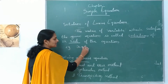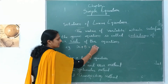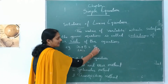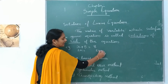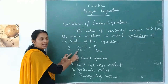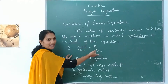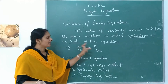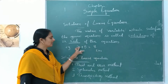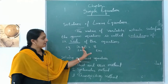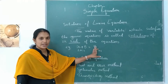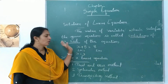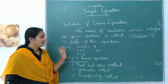One example: x plus 5 is equal to 8. x plus 5 is the LHS and 8 is called the RHS — left hand side and right hand side. The solution of this equation is x equals 3, because 3 plus 5 is equal to 8. This value is the solution or root of that equation.